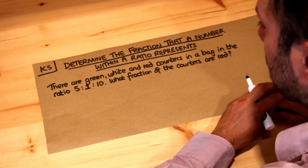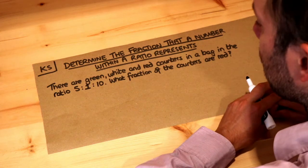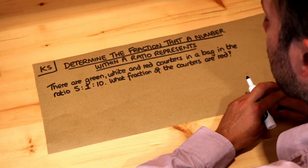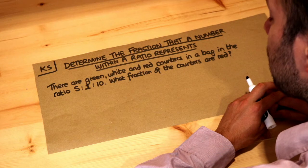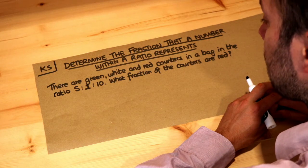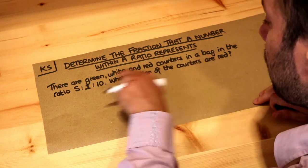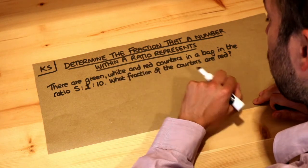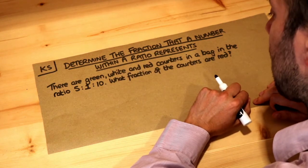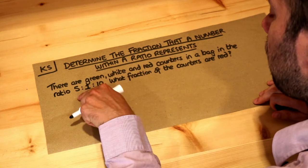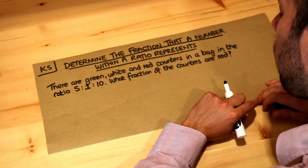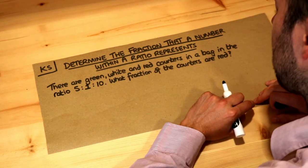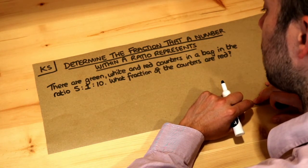Hello and welcome to Dr. Ross Mass's key skill video on determining the fraction that a number within a ratio represents. If we've got green, white and red counters in a bag in the ratio 5 to 1 to 10, what fraction of the counters are red?